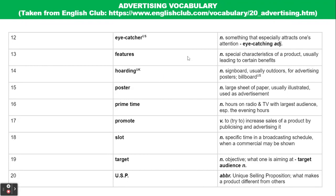Hoarding refers to the UK term while billboard refers to the US term — both are signboards usually outdoors for advertising posters. Then poster refers to a large sheet of paper, usually illustrated, used as an advertisement. Prime time refers to hours on radio and television with the largest audience, especially the evening hours. To promote is to try to increase sales of a product by publicizing and advertising it — so when you are advertising a product, you are promoting it.